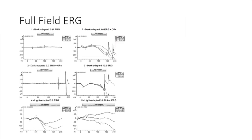An important clinical clue to ordering S-cone ERG for enhanced S-cone syndrome: in the full field ERG, the dark adapted 10.0 and light adapted 3.0 waveforms look almost similar to each other. That similarity — when combined with nummular pigmentary changes around the arcades — should prompt suspicion for enhanced S-cone syndrome and trigger the S-cone ERG extended protocol.